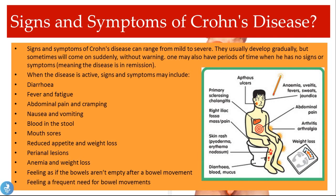Signs and symptoms of Crohn's disease can range from mild to severe, usually developing gradually but sometimes coming on suddenly. There may also be periods of remission with no symptoms. When the disease is active, signs and symptoms may include diarrhea, fever and fatigue, abdominal pain and cramping, nausea and vomiting, blood in the stool, mouth sores, reduced appetite and weight loss, perianal lesions, anemia, feeling as if the bowels aren't empty after a movement, and a frequent need for bowel movements.